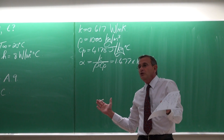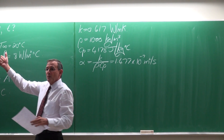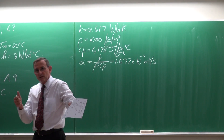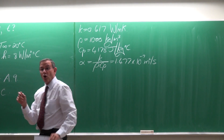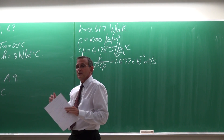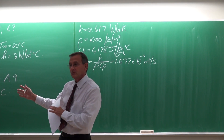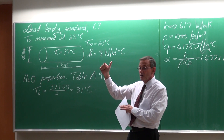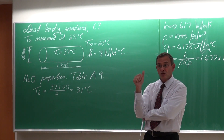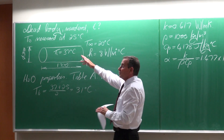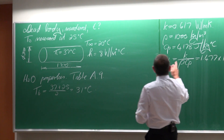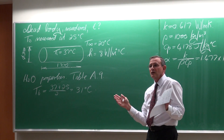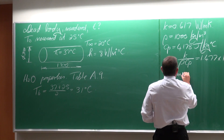Which approach are we going to use to determine the time of death? We have the lump system approach in paragraph 4.1 and in paragraph 4.2 the derivations for the plain wall, the long cylinder, and the sphere. Just to do an illustration, I'm going to do it both ways. If you think back of the lump system approach, it works very well if the bodies are small and if the thermal conductivity is high. The body is not small and the thermal conductivity is not high — 0.6 is small, whereas high thermal conductivity is 200–300 for metals.